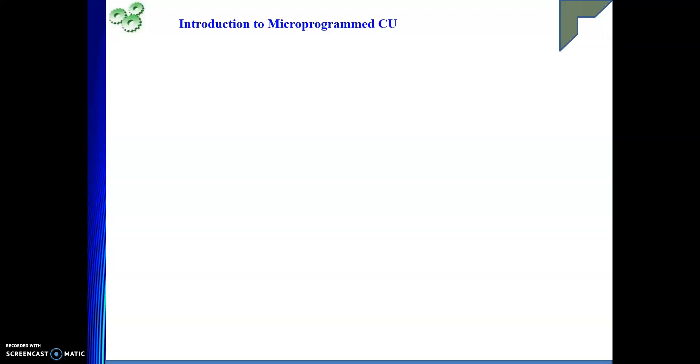Now I will explain what we are going to do in microprogrammed control unit design. Before going to the design, let me talk about the required building blocks. Microprogrammed control unit design is based on a software approach — it will be a collection of micro instructions and micro routines. The basic aim is to execute one instruction, and to do that we need to generate the required control signals in the required sequence at the proper time.